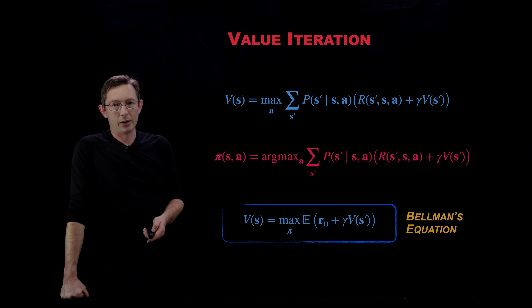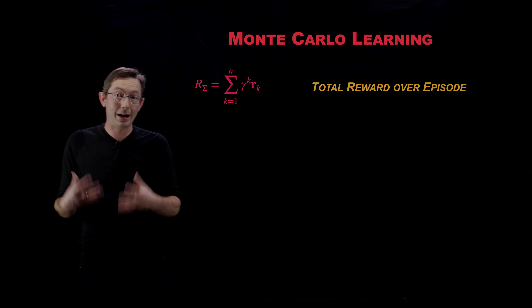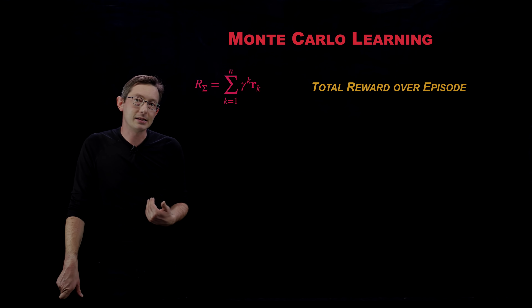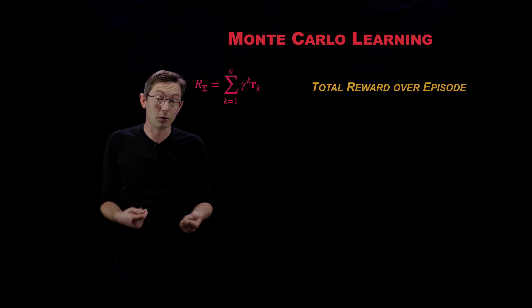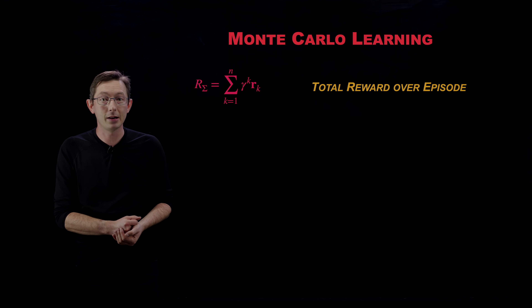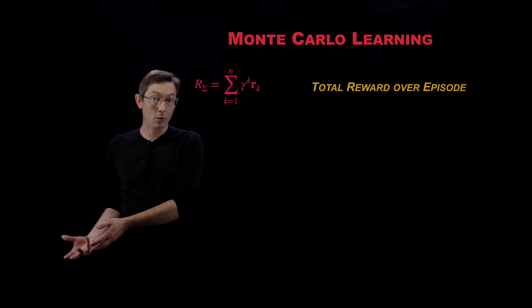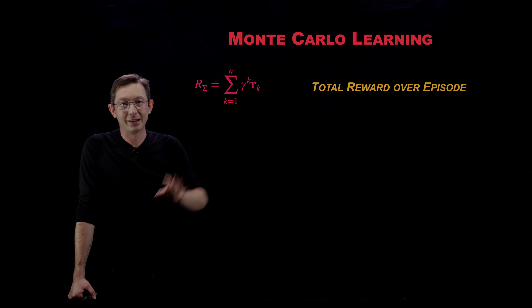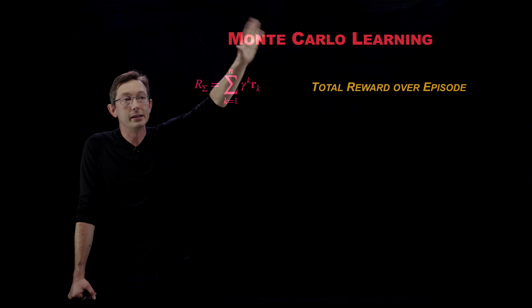When we don't have access to a model for how the system evolves or what the reward structure is, we're stuck using trial and error learning. This makes sense in biological situations too — the first time you play tic-tac-toe, someone told you three X's or O's in a row wins, but they didn't give you a model for how the game unfolds; you had to play games and learn the rules and reward structure. The simplest approach to model-free learning from pure trial and error is called Monte Carlo learning.